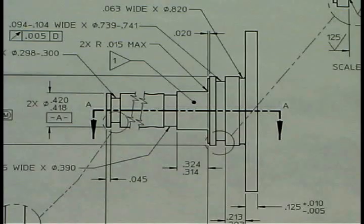In order to understand how a cutting plane line works with the section view it refers to, you must first understand the basic principles of a plane. A plane is a flat surface.